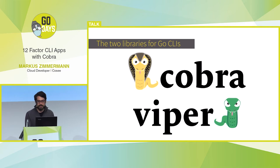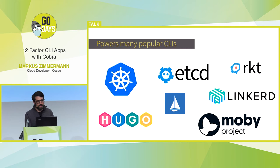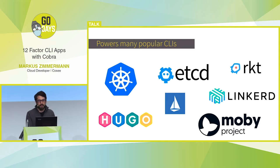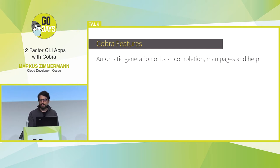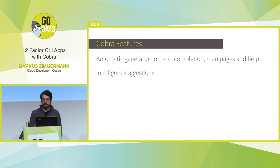Viper integrates really well with Cobra. Let me show you some logos of very popular CLIs: Cobra is used in kubectl, Hugo the static page generator, and Docker is also using it. It's immensely popular, which shows this library is really mature and can be used for production CLIs. Some cool features of Cobra: it can automatically generate bash completion, man pages, and help — you don't need to write any code for this. It also shows suggestions when you mistype a command, like you see in Git.